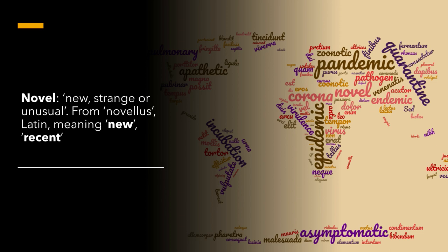The next word is novel. It's often called the novel coronavirus, and that has nothing to do with a book. Novel means not just new but strange or unusual — it's a brand new coronavirus they haven't seen before. They first detected it in December, so it's very new, and that's why there aren't as many reliable tests and why it's taking the world by shock. There are other coronaviruses out there; this is a new or strange one, from the Latin novelus meaning 'new or recent.'